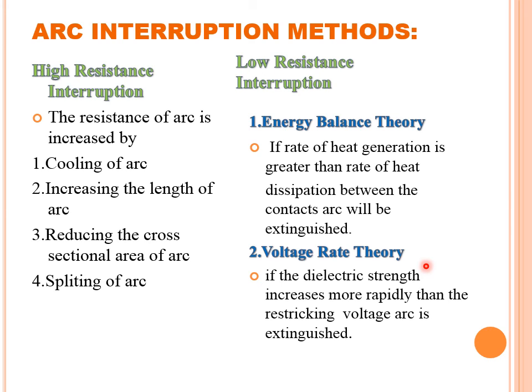There is also the current zero method, which is preferred only for AC circuit breakers. In AC supply, the current crosses zero every half cycle. At that instant, all electromagnetic energy gets converted into electrostatic form and voltage rises. The strategy is to extinguish the arc at the instant of current zero, preventing re-ignition.